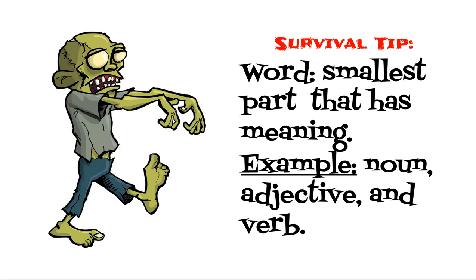Definition land survival tip: a word is the smallest part that has meaning. An example of a word could be a noun, an adjective, or a verb.